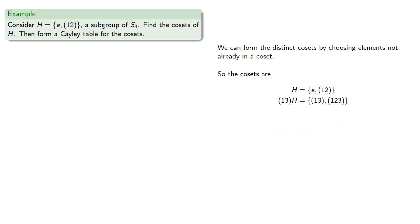And the transposition (2,3) is not in a coset, so we find the coset (2,3)H. And since S3 only has six elements, this is all of the cosets.